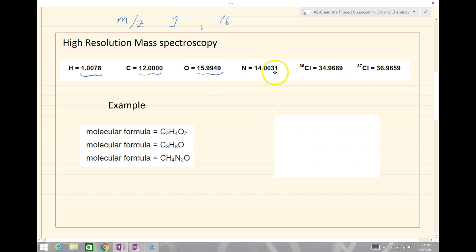Nitrogen just over 14. Chlorine 35 is just under 35. Chlorine 37 just under 37 there.